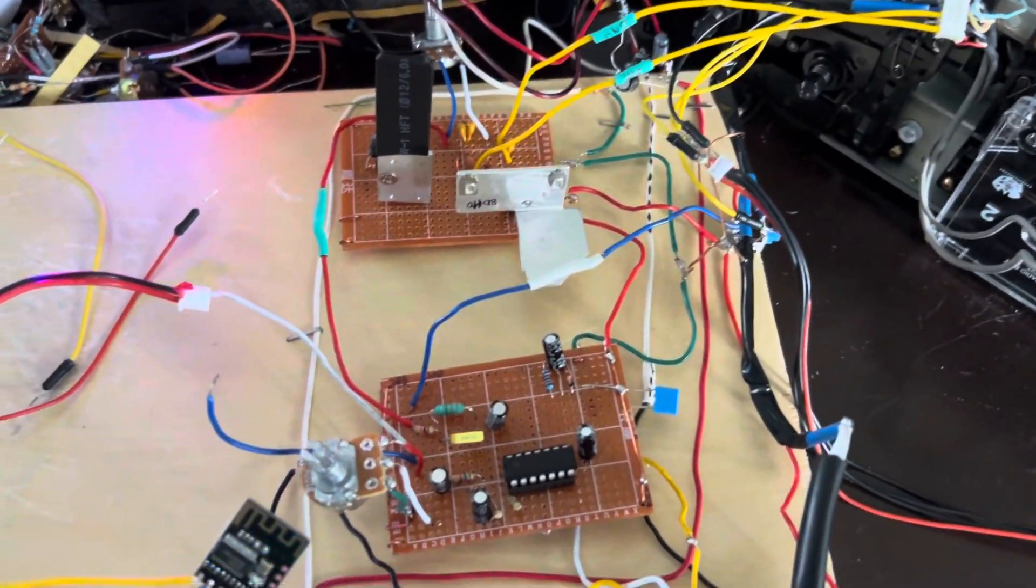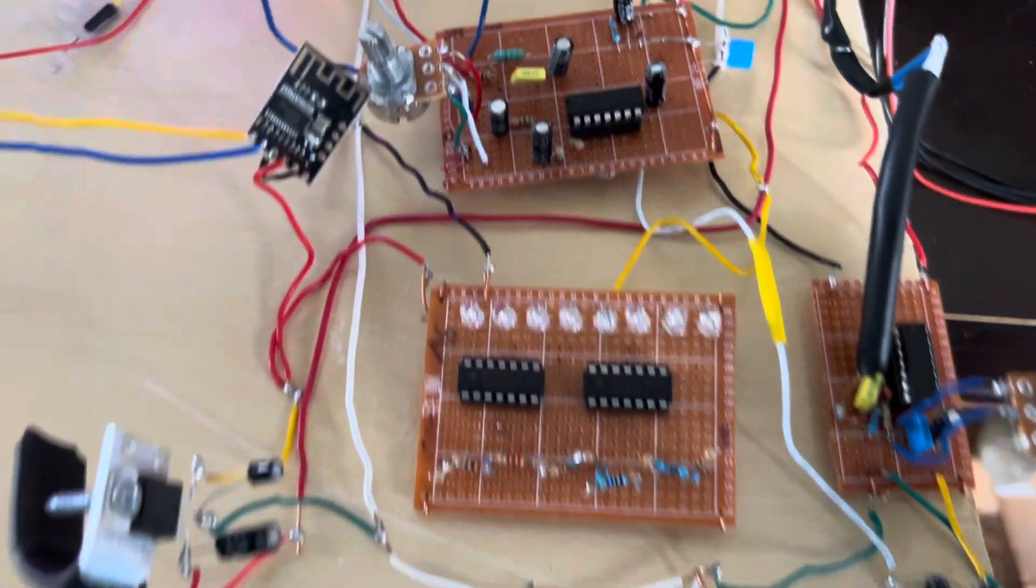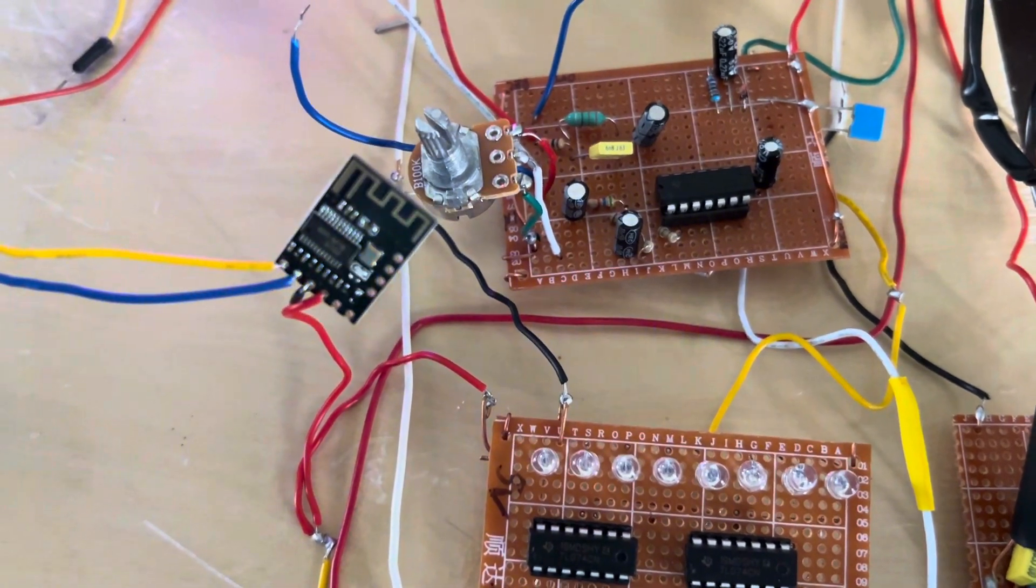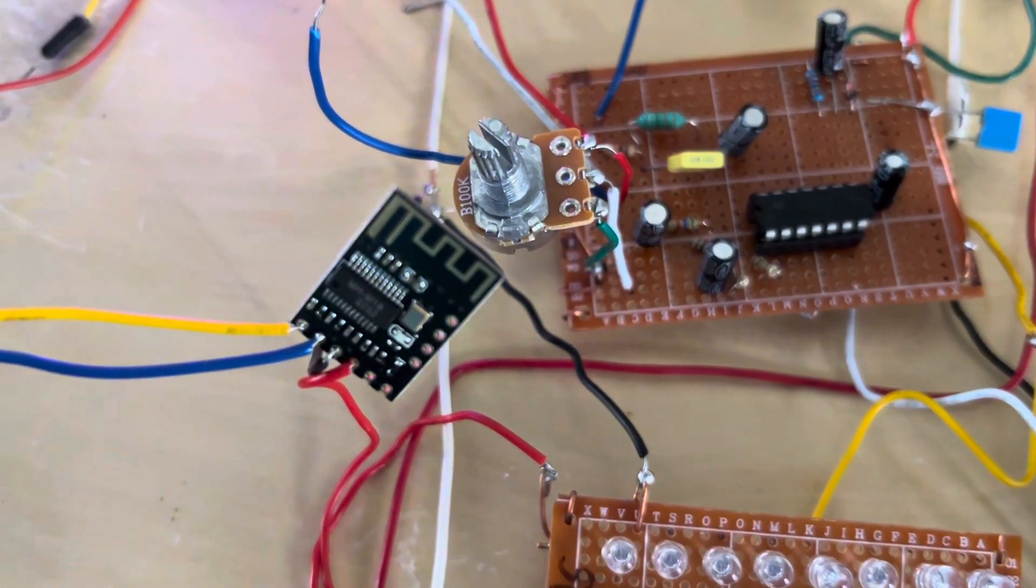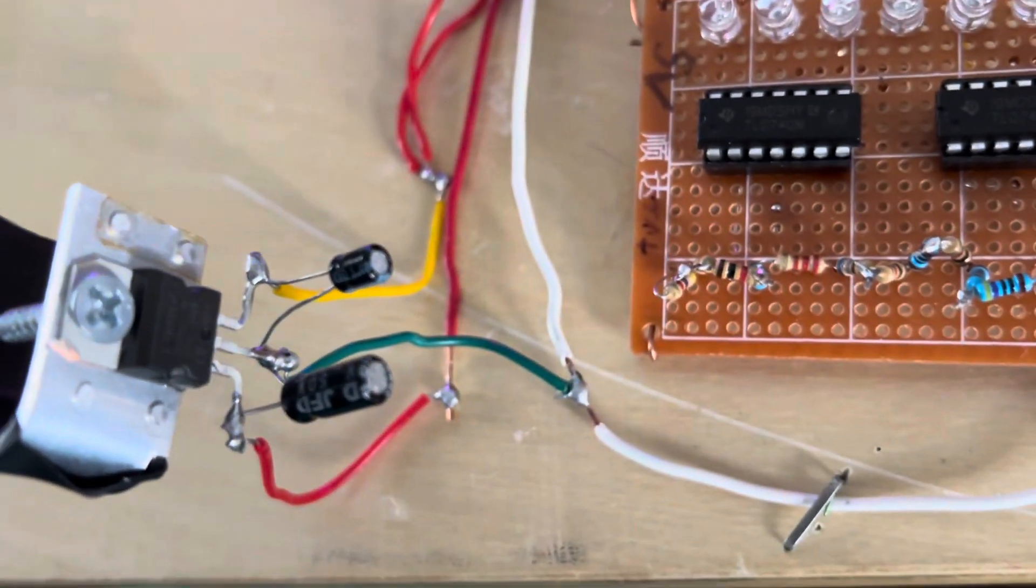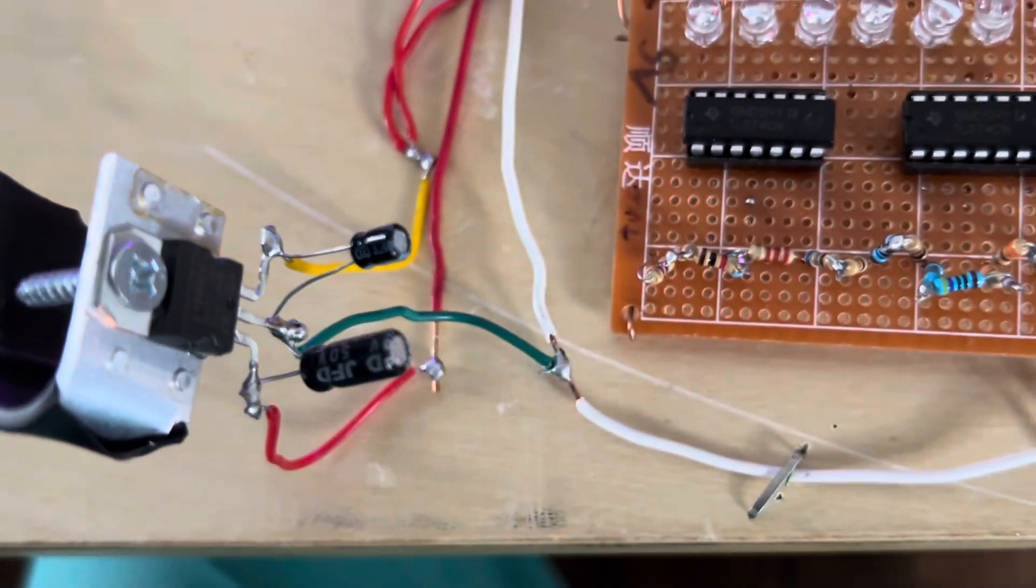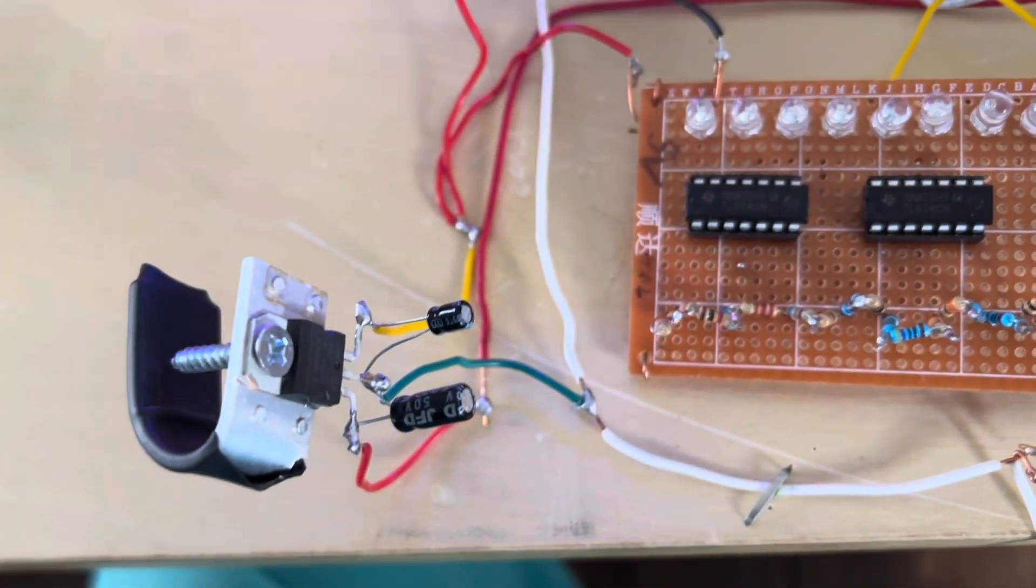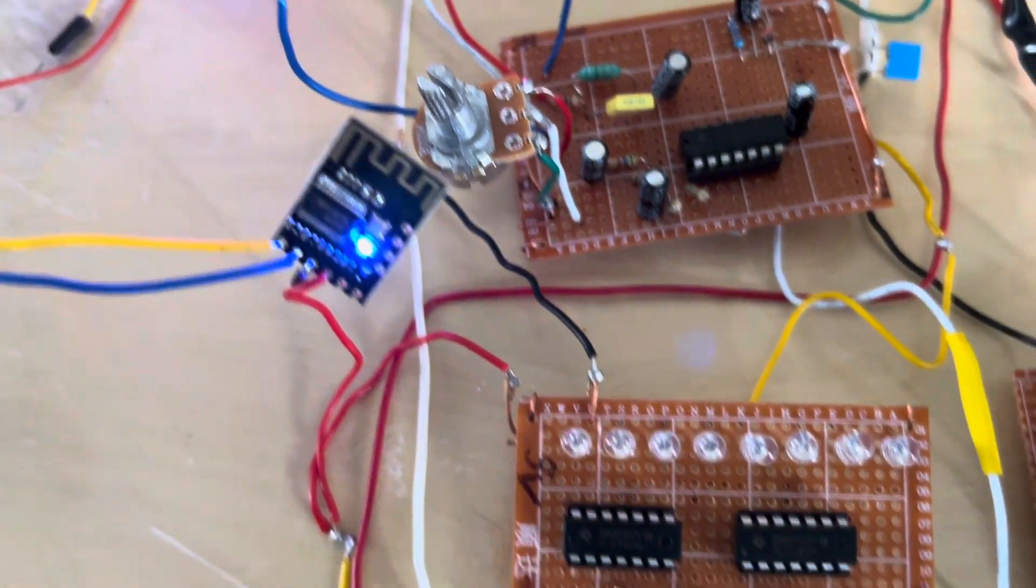So now I have this little tape recorder all on perf boards with the Bluetooth receiver. I have an LM7805 to provide 5 volts of power to Bluetooth.